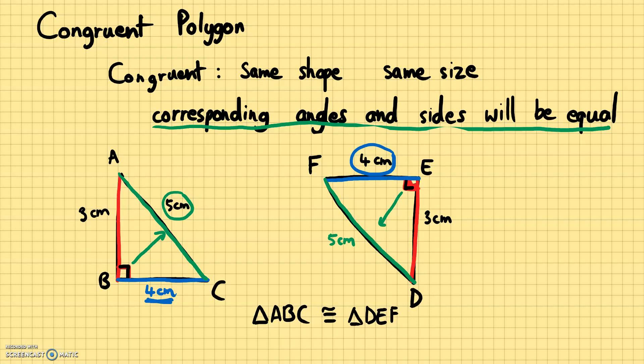So that's what we mean by congruence — the corresponding sides and the corresponding angles have to be exactly the same.